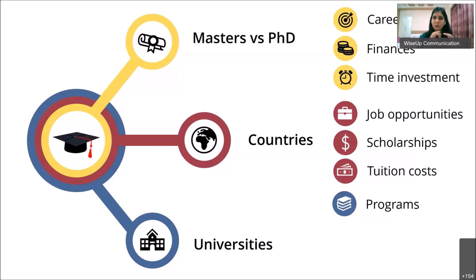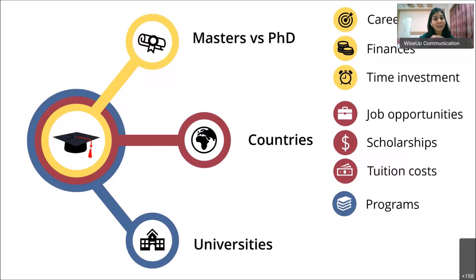Nine months is also too short to find internships and jobs. A good master's program should be one and a half to two years. That gives you enough time to actually learn, gain international experience and exposure, complete an internship, and then look for a job as well. I strongly suggest looking for master's programs that are at least one and a half to two years in duration.